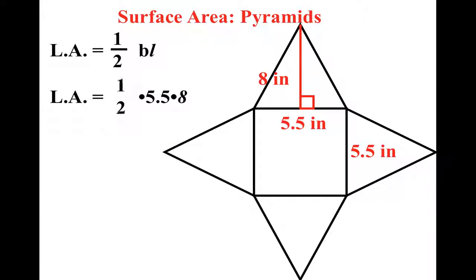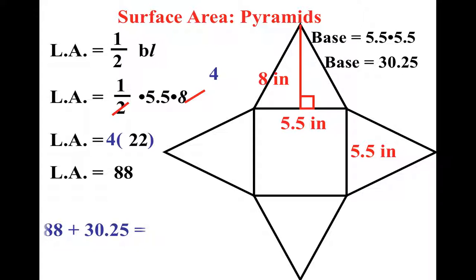Okay, so for the lateral area, nice simplification. And we end up getting 4 times 5.5, which is 22. Now once you've done that once, nice, right? You just have to multiply by all four sides, or all four triangles. And then the square is the easy part. Add them together, 118.25 inches squared is the surface area of this pyramid.